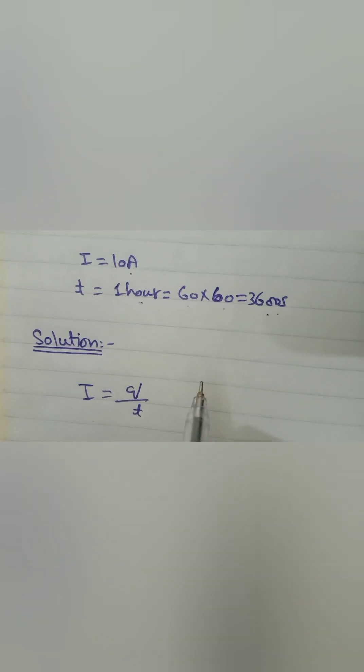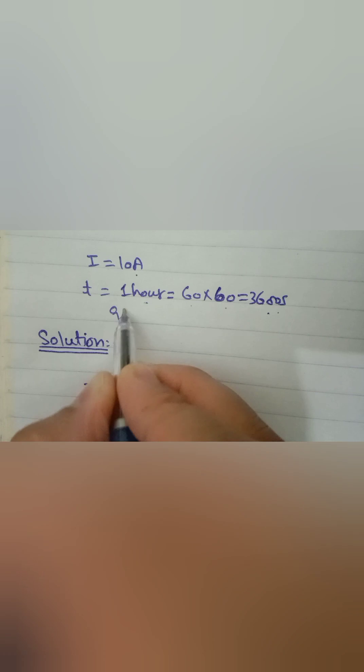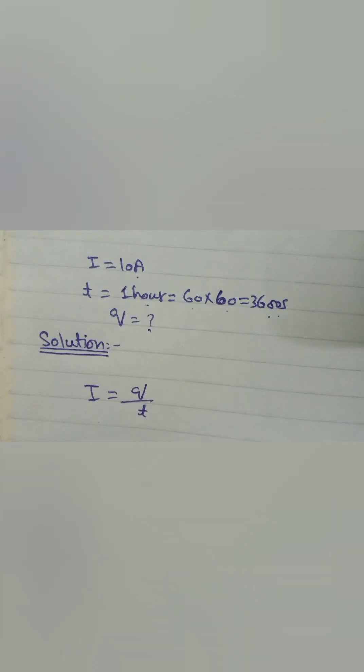We know the equation of current is I equals Q over T. We have to find Q, so we rearrange the equation. Q equals I into T. Just put in the values and you get the answer.